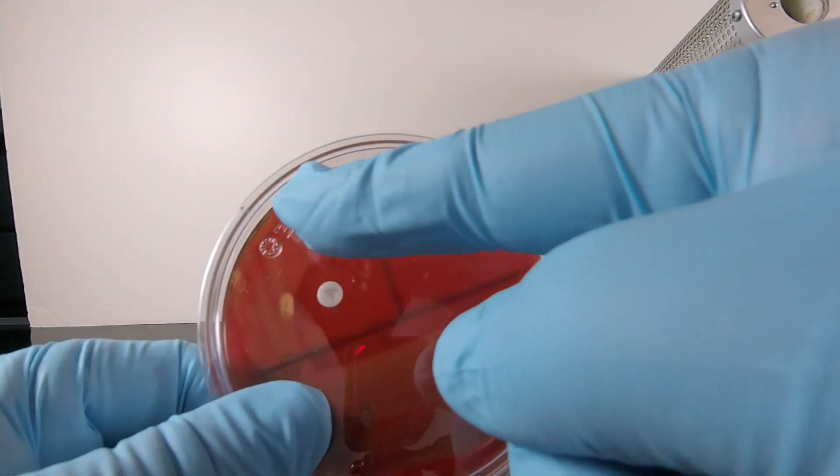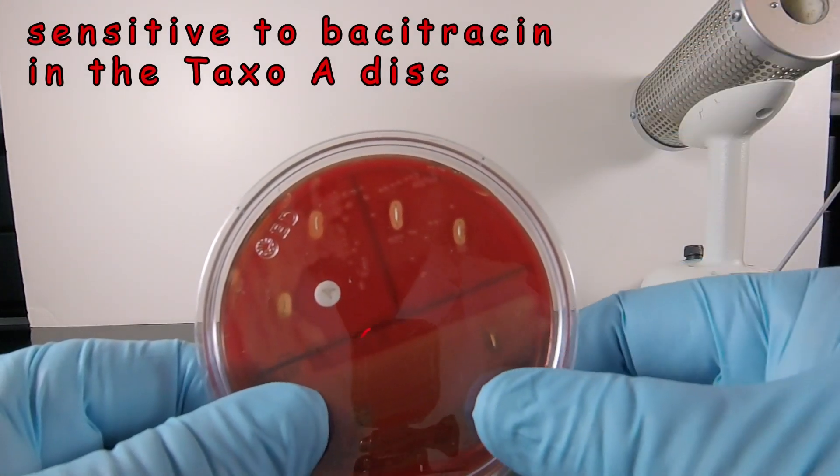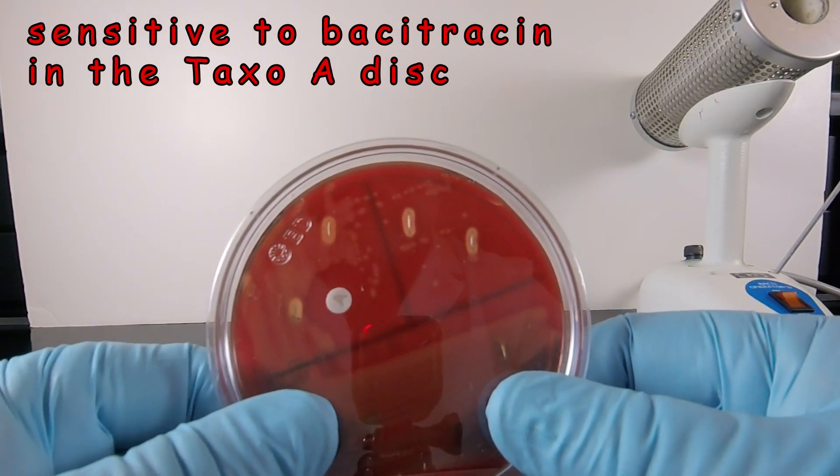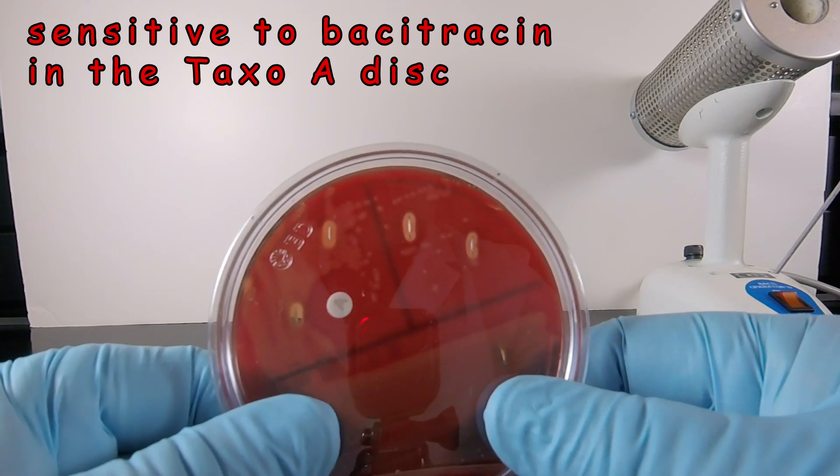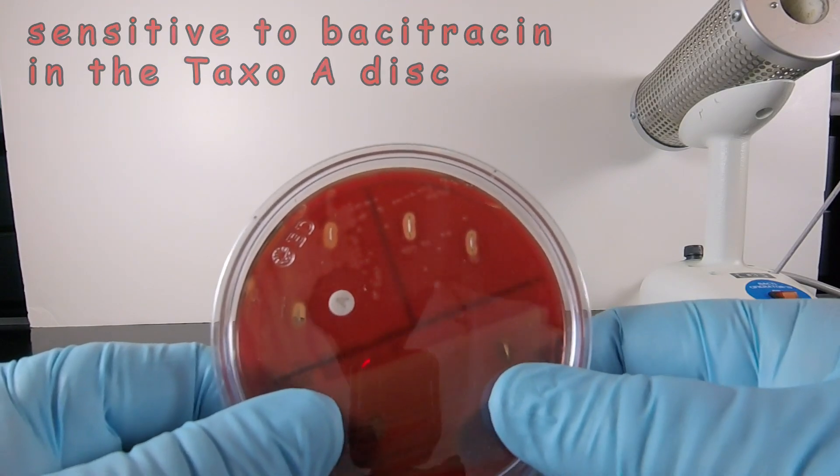And finally, we see a zone of inhibition around the Taxo A disk containing bacitracin, showing the bacterium is sensitive to the A disk or is inhibited by bacitracin.